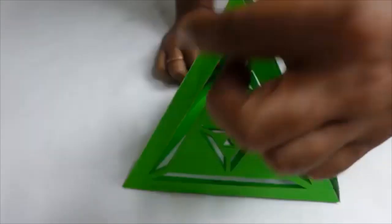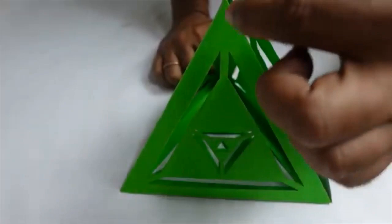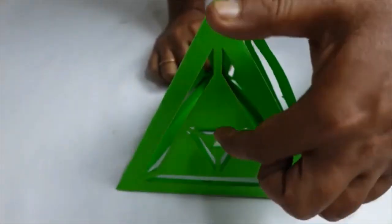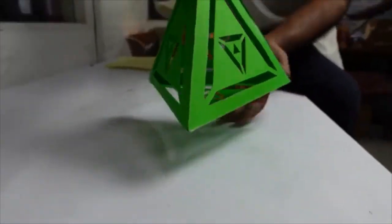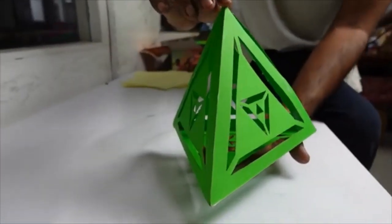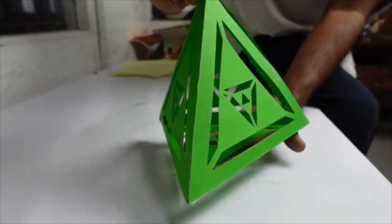One more important point is that in any equilateral triangle, its center point divides its height into 2 is to 1 ratio. But in tetrahedron, the center point divides its height into 3 is to 1 ratio. Very beautiful structure indeed.